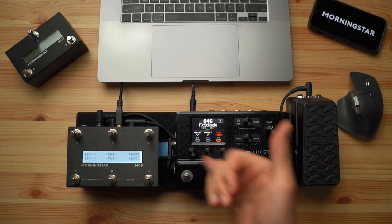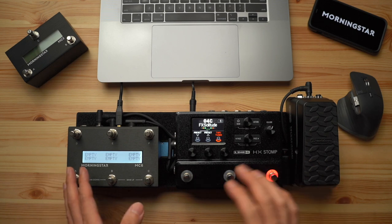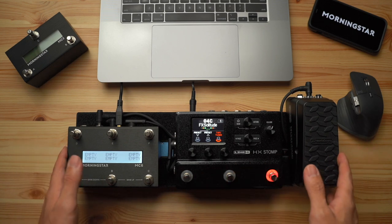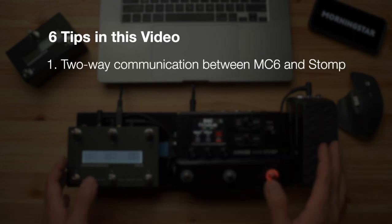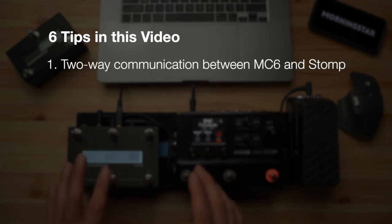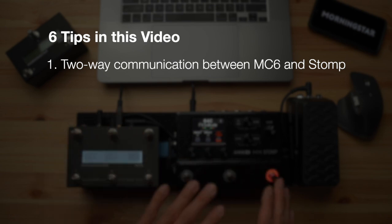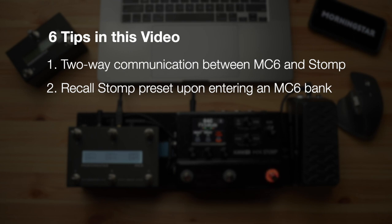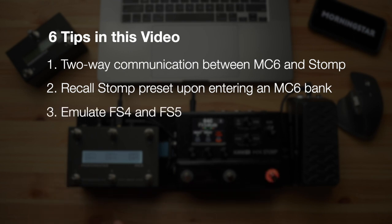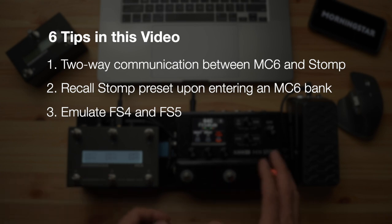Today we're going to take you through 6 features that allow you to use the HX Storm and MC6 combo in creative and powerful ways. In this video, you will learn how to enable two-way communication between the MC6 and HX Storm — this changes banks on the MC6 when you change presets on the HX Storm itself — and how to recall an HX Storm preset upon entering a particular bank on the MC6. How to use the MC6 switches to emulate FS4 and FS5, which can be used to control very useful functions on the HX Storm that do not have assignable MIDI CC numbers.